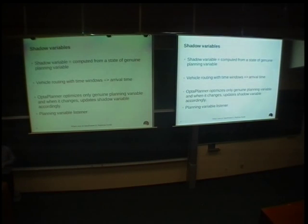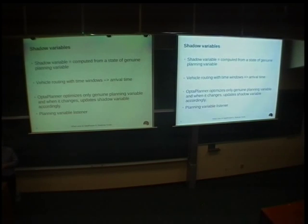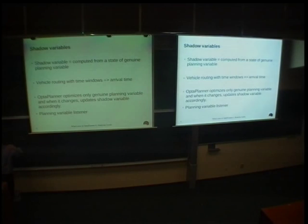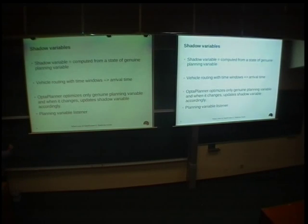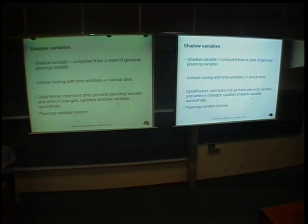Next thing: shadow variables. I have talked about planning entities and about planning variables. Very simply, how Optaplanner works: it changes those references from planning entities to different planning variables and tries to evaluate the fitness function to find out if the solution is better or worse and so on. A genuine planning variable and a shadow variable is something that can be computed from the state of the genuine planning variables.